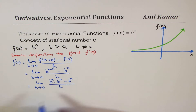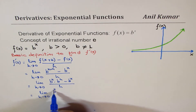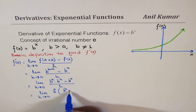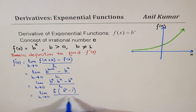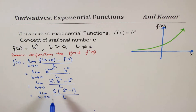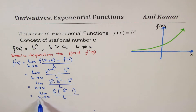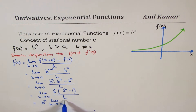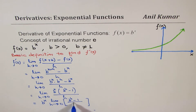Now we can take b to the power of x as a common factor. We get limit h approaches 0 of b to the power of x times b to the power of h minus 1 over h. Since b to the power of x is independent of h, we can write it outside the limit, giving us b to the power of x times limit h approaches 0 of b to the power of h minus 1 over h.